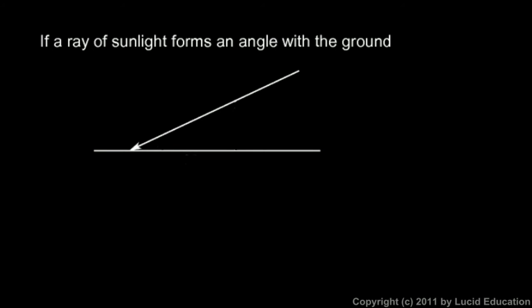Well that ray of sunlight makes an angle with the ground and we'll call that angle theta, so you can write theta in there. That's a Greek letter. Greek letters are commonly used to represent angles and theta is very common.